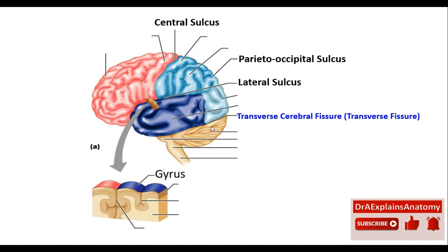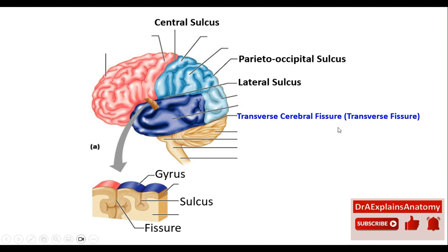The ridges on the brain are called the gyrus — so this right here is a gyrus. This is a sulcus, a superficial cut. And this is a fissure. The first fissure we mentioned is the transverse cerebral fissure, also called the transverse fissure.